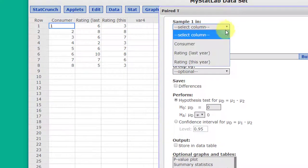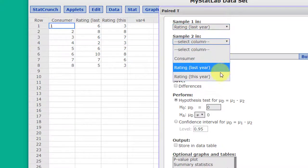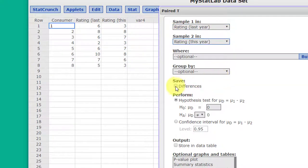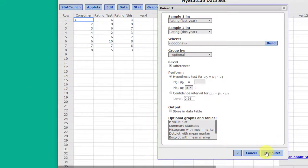My sample one is last year. Sample two is this year. We want to save the differences in order to find the S of D and mean and D bar easily. This is a hypothesis test for the mean difference equal to 0. And it's a not equal for the alternative. So I'm going to click compute.